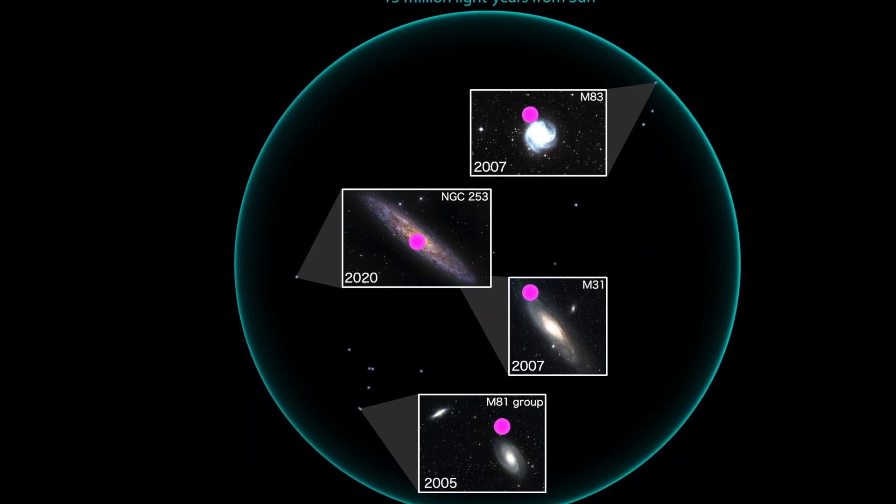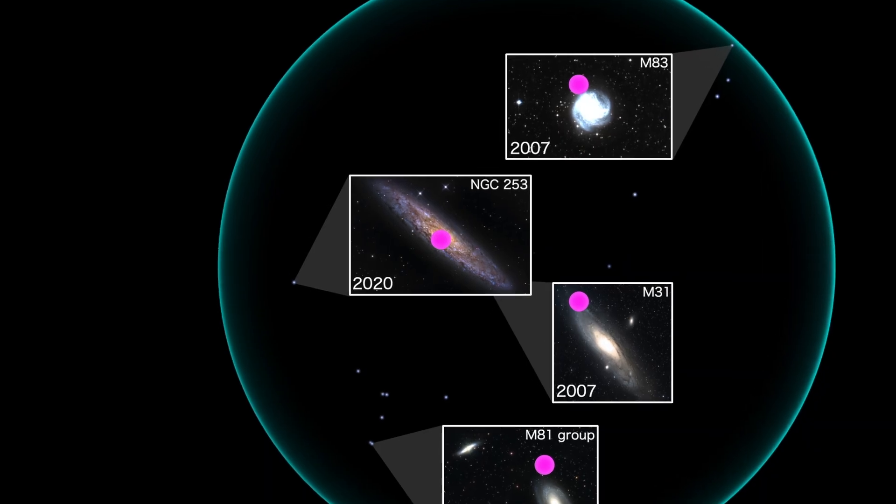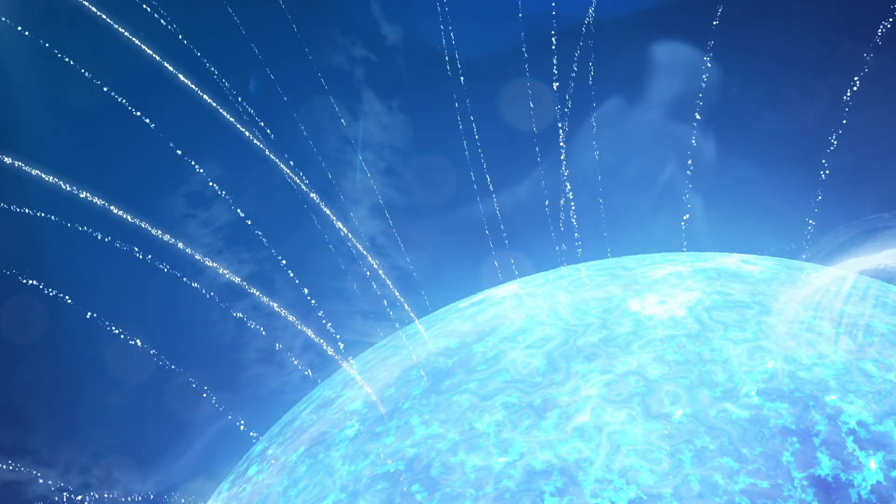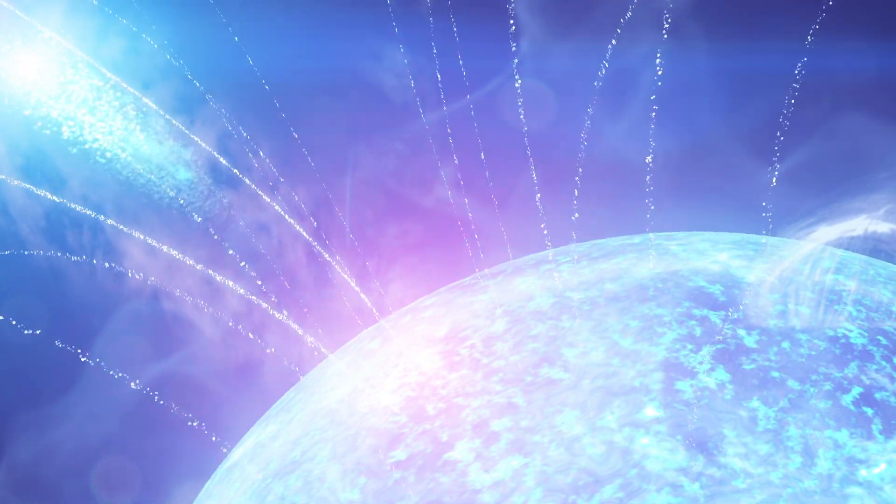Astronomers suspect that a few percent of observed short GRBs may in fact be giant flares: high-powered eruptions in our galactic backyard, produced by the strongest magnets in the cosmos.